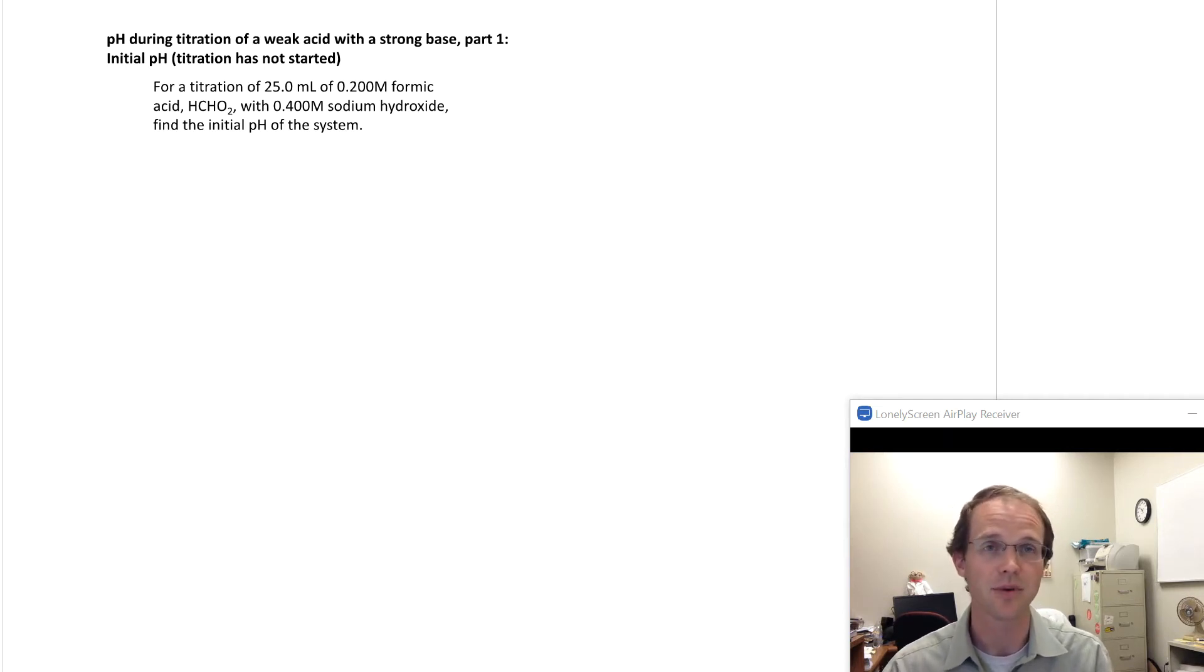It turns out that problem is relatively simple if you remember how to do a weak acid, because formic acid is simply a weak acid. Even though it's a titration problem, this part of it is fairly simple. We're just going to look at how to solve for the pH of a weak acid. We take our formic acid and look up in a table that the Ka for formic acid is 1.8 times 10 to the minus 4th.